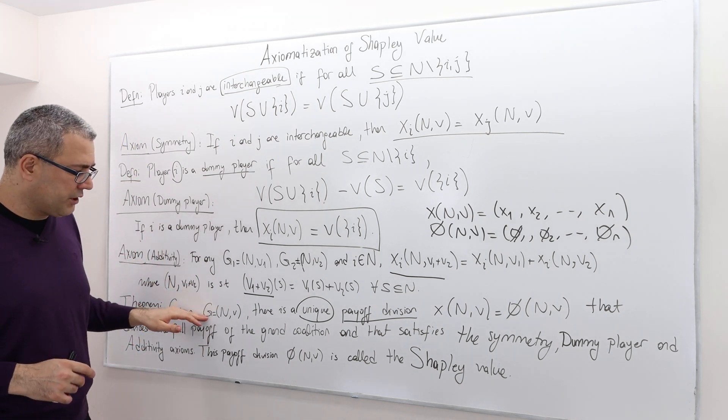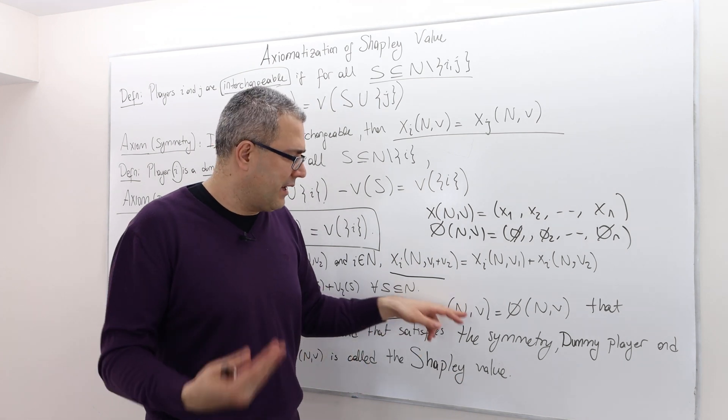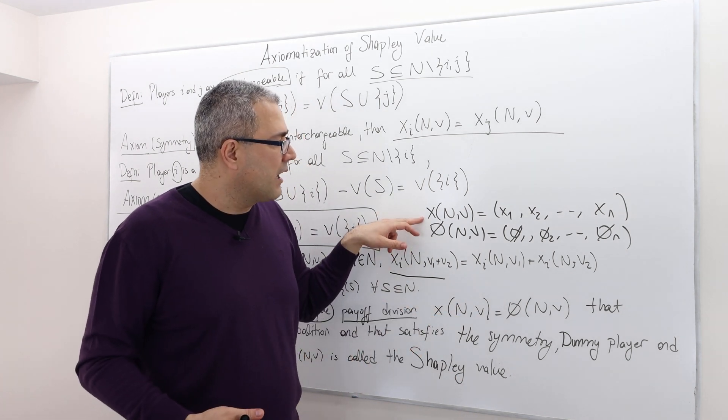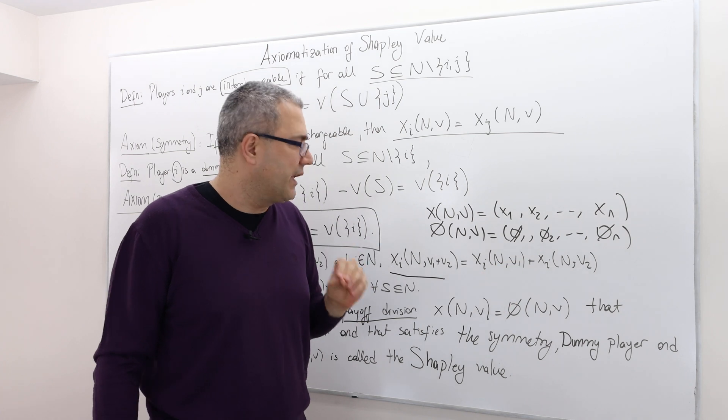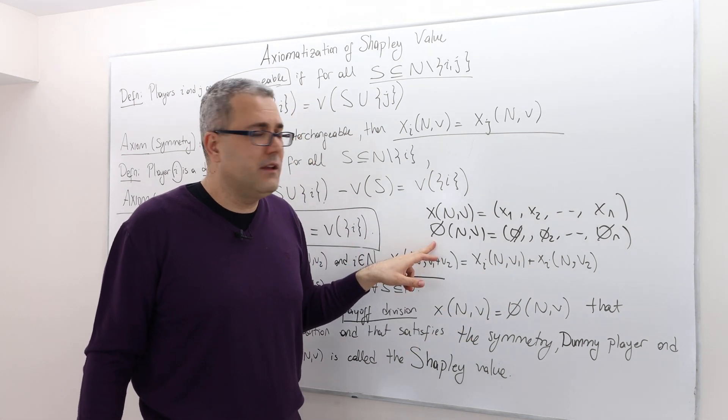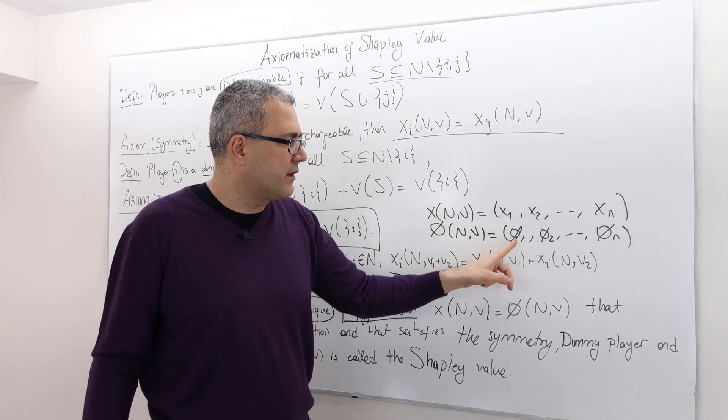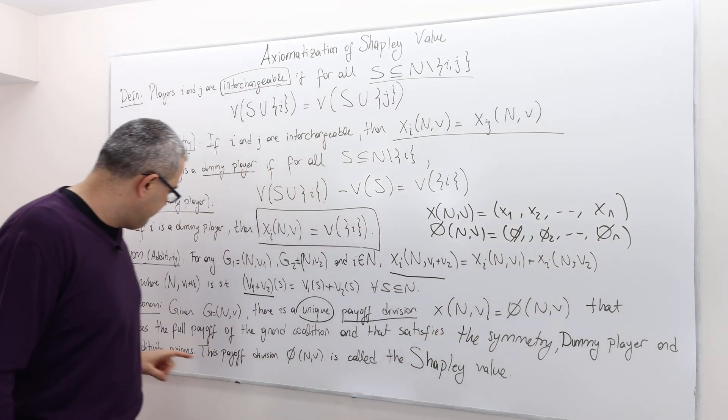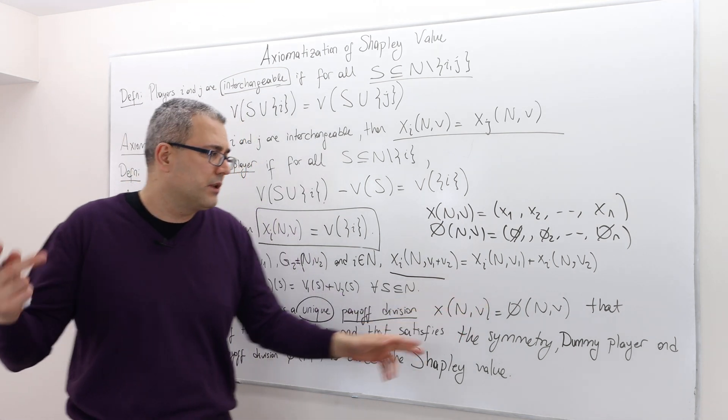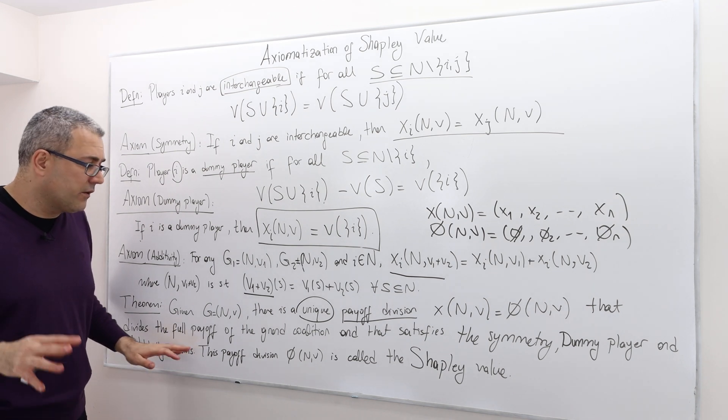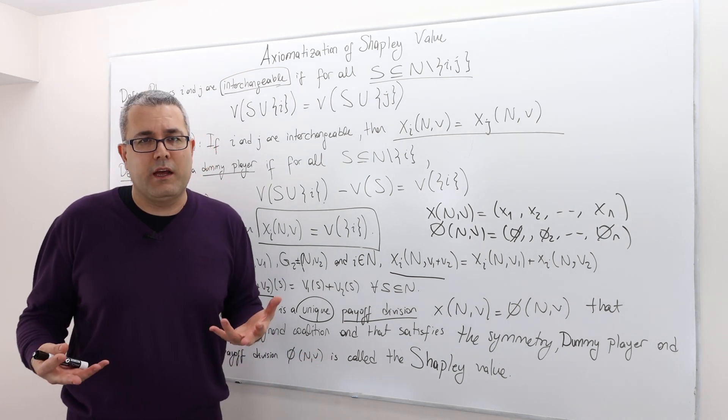So let me read it. Given any coalitional game, there is a unique payoff division rule X and V meaning given the game and V, I'm going to calculate the division rule, which is a vector, basically calculates what player one, two, and up to N will get. And that's equal to the phi and V meaning again, remember the phi was the notation we used for the Shapley value. And again, it's a vector phi one, phi two, all the way up to phi N, that divides the full payoff of the grand coalition. And that satisfies the symmetry dummy player and additivity axioms. So it's a unique payoff division rule. This payoff division phi is called the Shapley value.